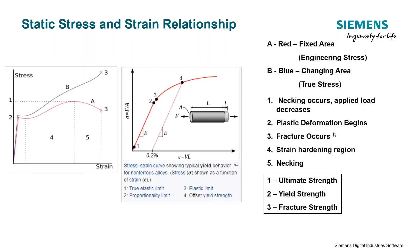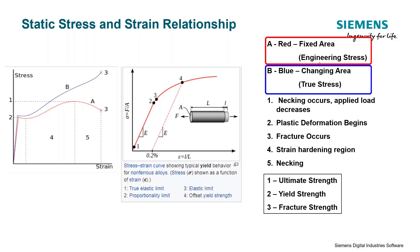Looking at a stress versus strain curve, there are two definitions of stress and strain: engineering stress and strain, and true stress and strain. With engineering stress and strain, we assume the area of the test specimen is not changing — a simplification made to make development of these curves easier. As you can see, the red curve has a generally lower stress magnitude than the blue curve, meaning we get an under-prediction of the actual stress when using engineering stress. The blue curve represents true stress, which accounts for the changing cross-sectional area of the part as it deforms.